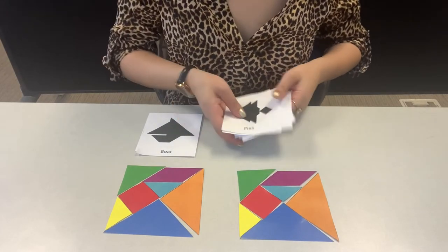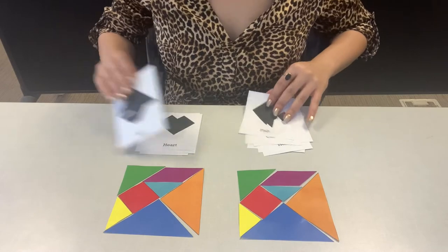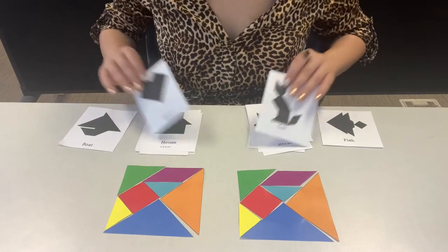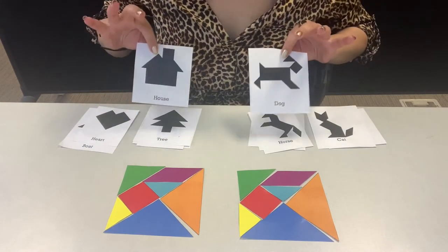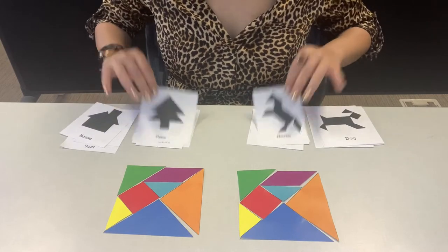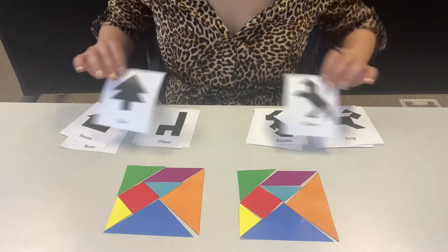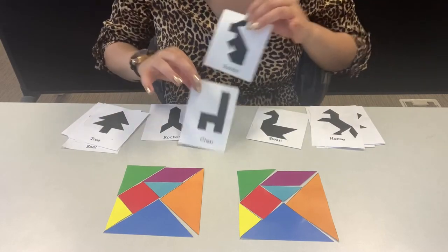The idea is that you have two sets so you can make two things at the same time. So say you want to make the house and the dog, or the tree and the horse, or you want to put the rabbit on the chair.